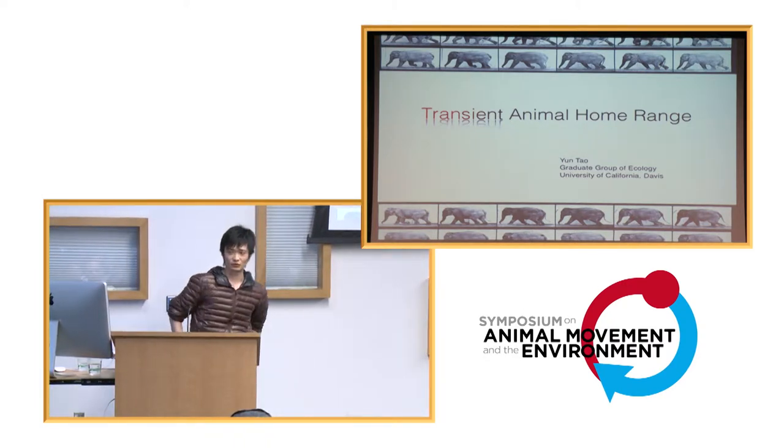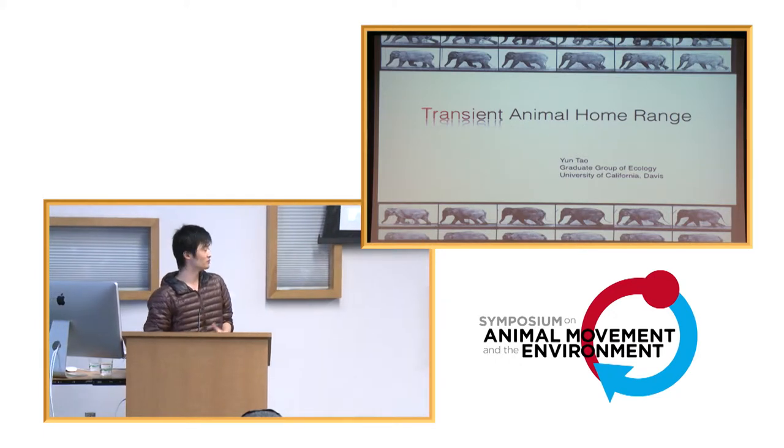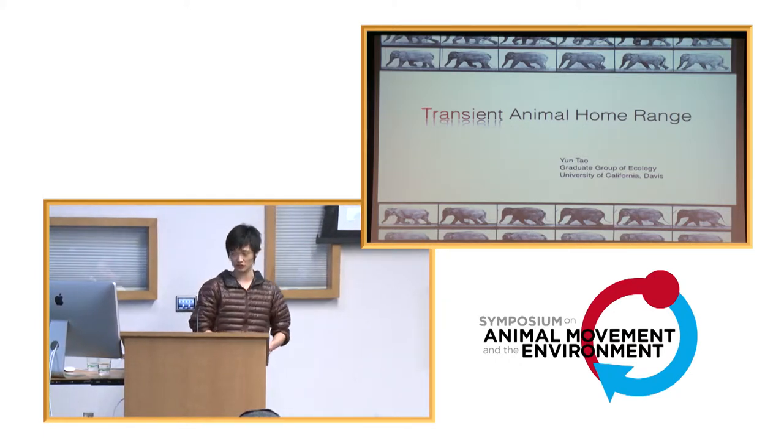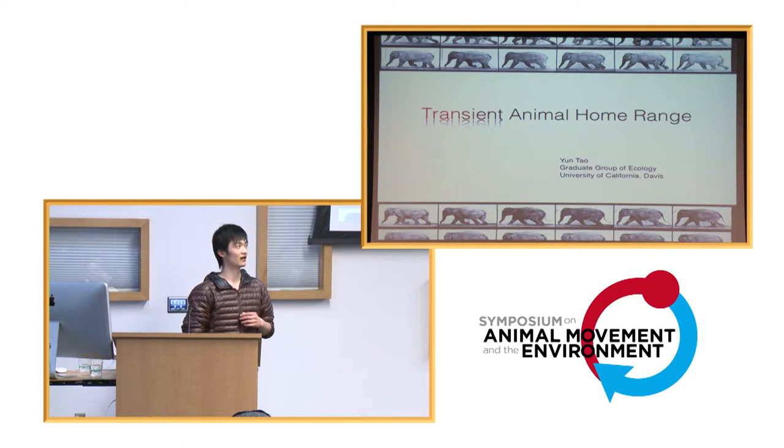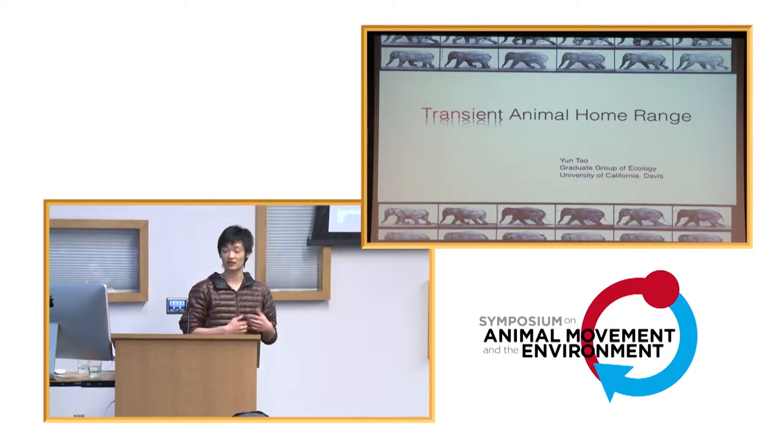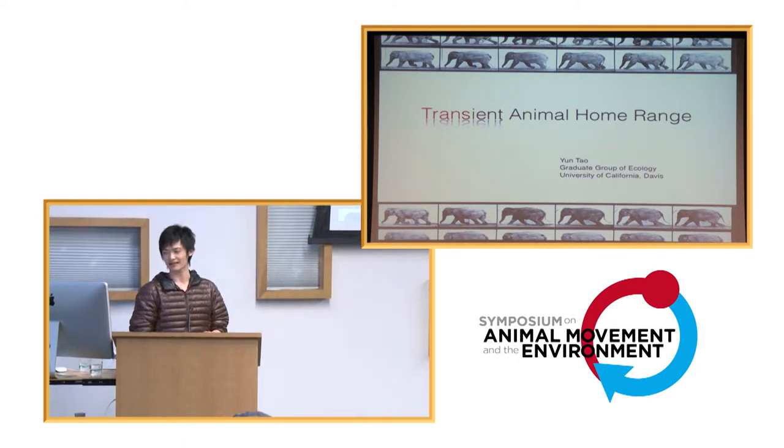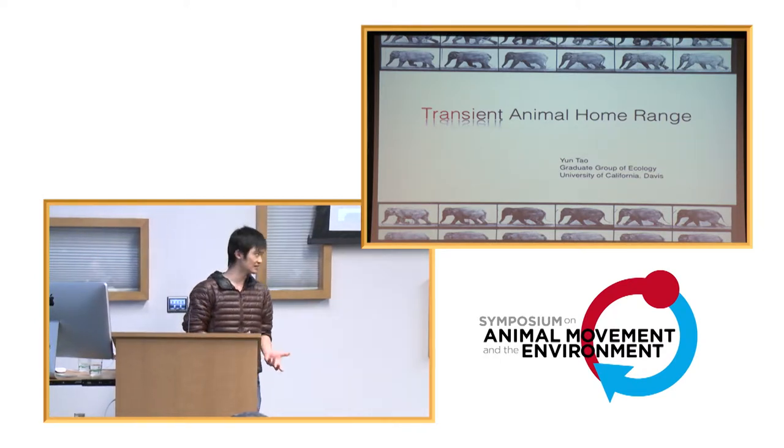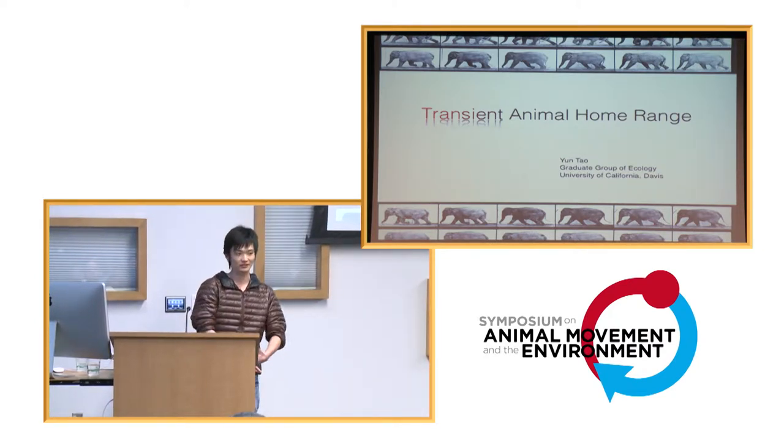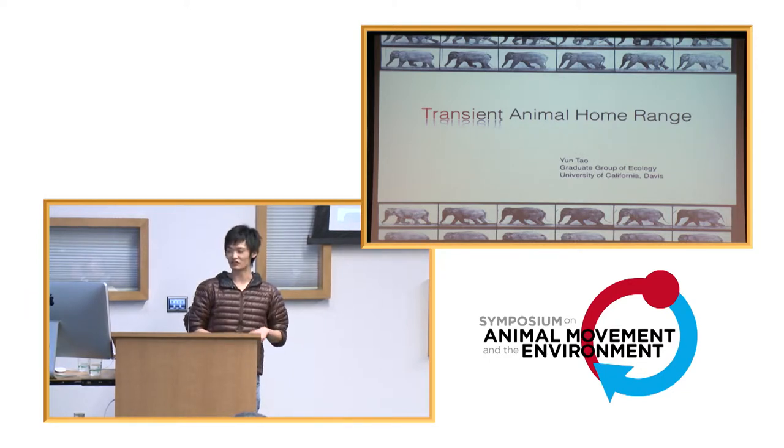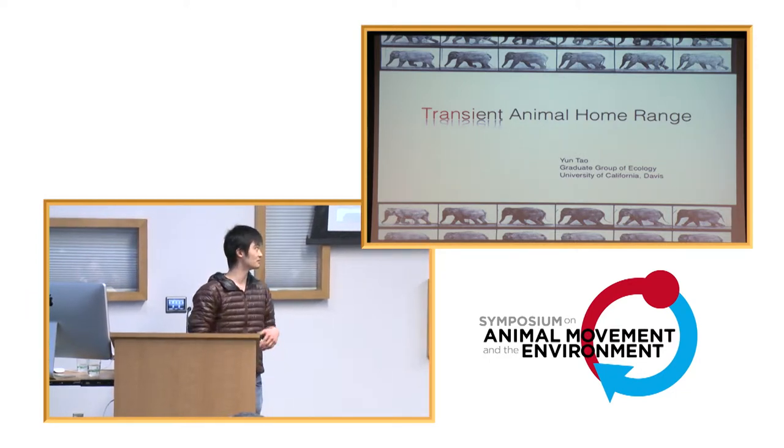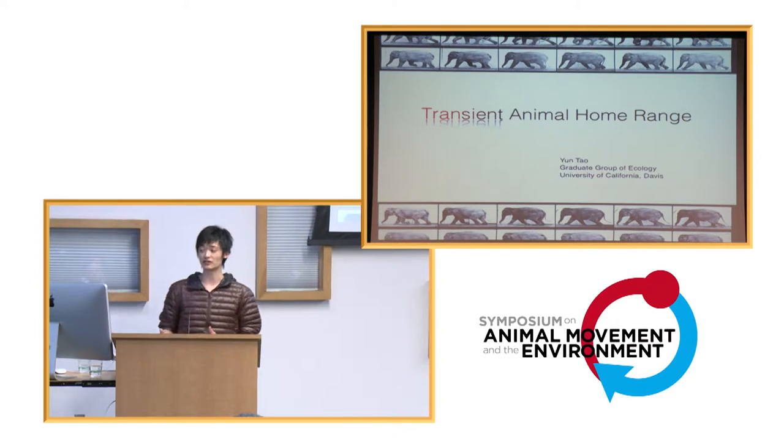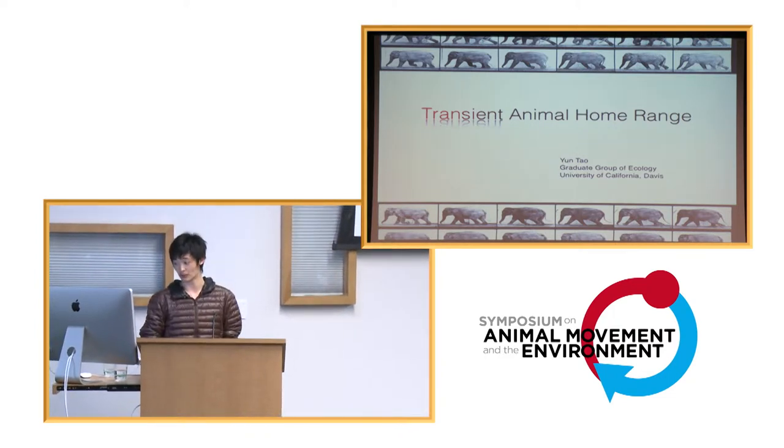So transient dynamics is one of these things that has been picked up in population biology a few years back. People are looking at synchronies and metacommunities and so on. But despite the fact that movement phenomena itself is intrinsically a very dynamical event, transient analysis is not something that's been done quite yet, especially in the theoretical realm of animal home range.